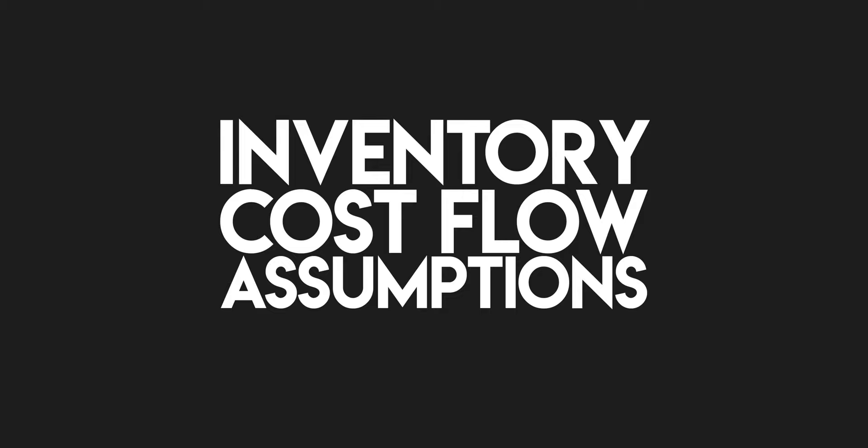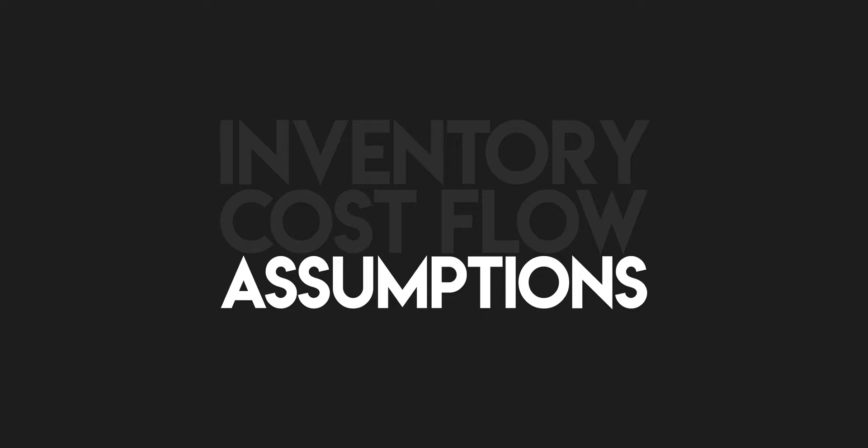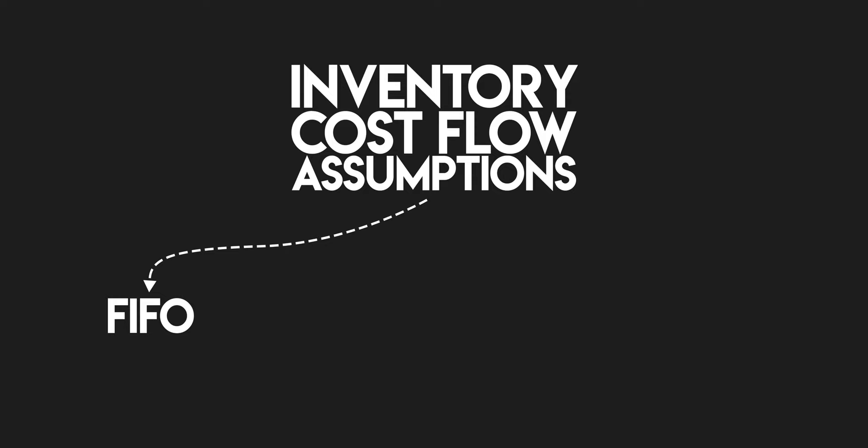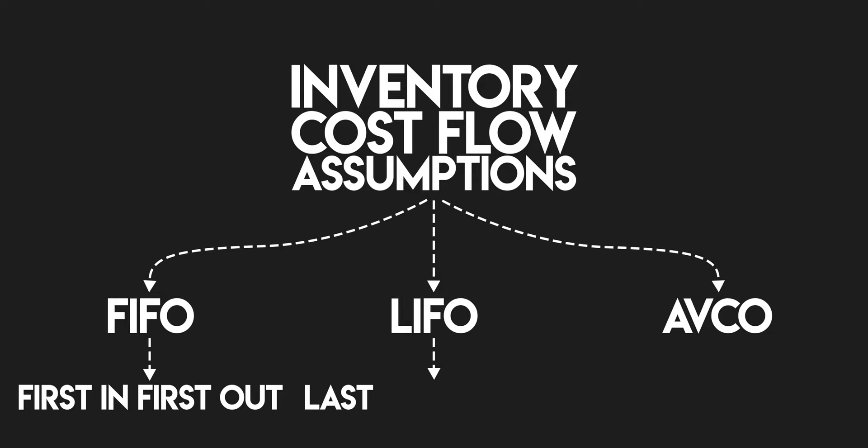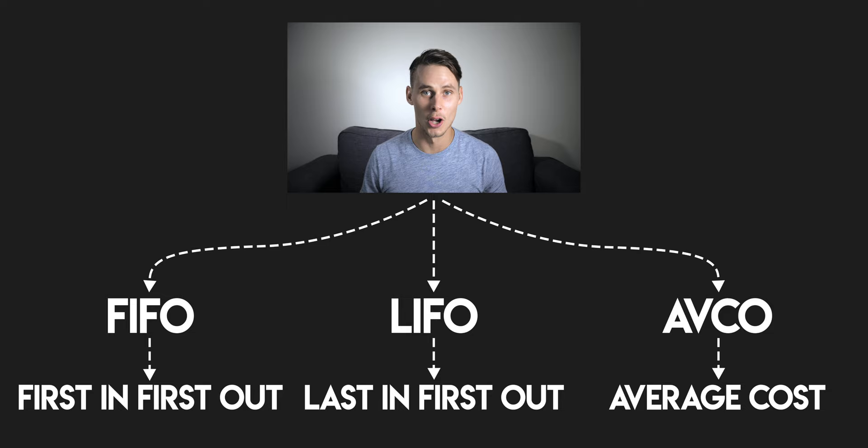These are assumptions, so they don't necessarily reflect the reality of underlying transactions. There are three main types of cost flow assumption: FIFO, LIFO, and AVCO — first in, first out; last in, first out; and the average cost method. In this video, we're going to concentrate on FIFO, but I'll be covering LIFO and AVCO in the near future as well. So if you'd like to see that, remember to subscribe.